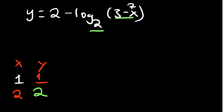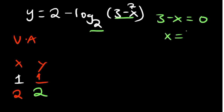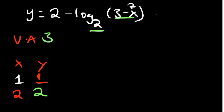Another thing that helps us determine the vertical asymptote: when does what's in the brackets equal 0? So 3 minus x can only equal 0 when x is equal to 3. So that is our vertical asymptote — x equals 3. With this information, we should be able to sketch it out.